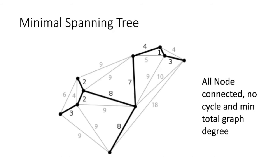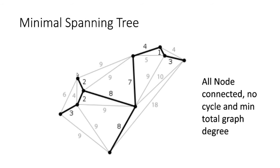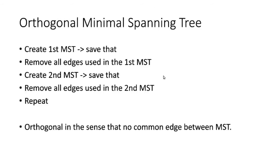Now, what is an Orthogonal Minimal Spanning Tree? You create your first minimal spanning tree, save it, and remove all those edges. Then you create a second MST from what remains, save it, remove those edges, and repeat. It's orthogonal in the sense that there are no common edges between the MSTs. You then accumulate all of those edges into your OMST — it's a combination of multiple minimal spanning trees.